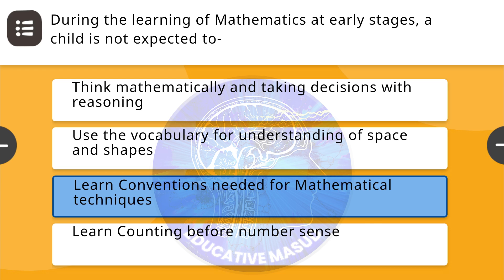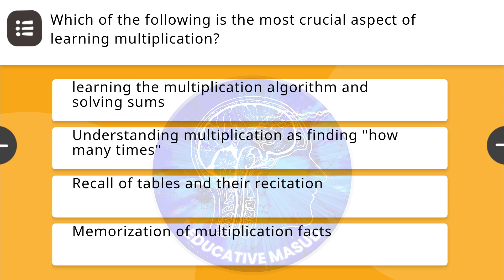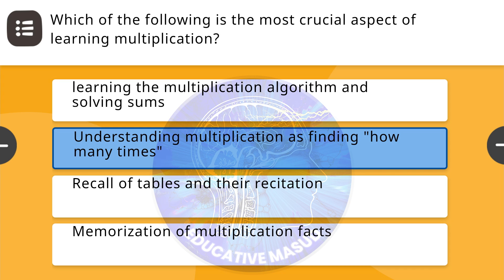Next question: which of the following scenarios is not involved in word problems related to addition and subtraction? Correct answer is classification of objects. Next question: during the learning of mathematics at early stages, a child is not expected to? Correct answer is learn conventions needed for mathematical techniques.